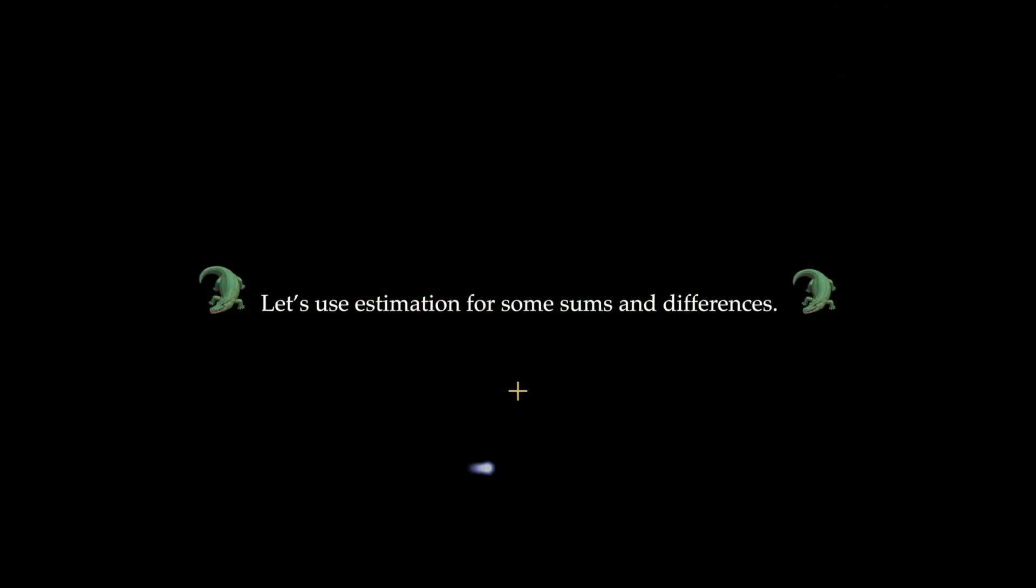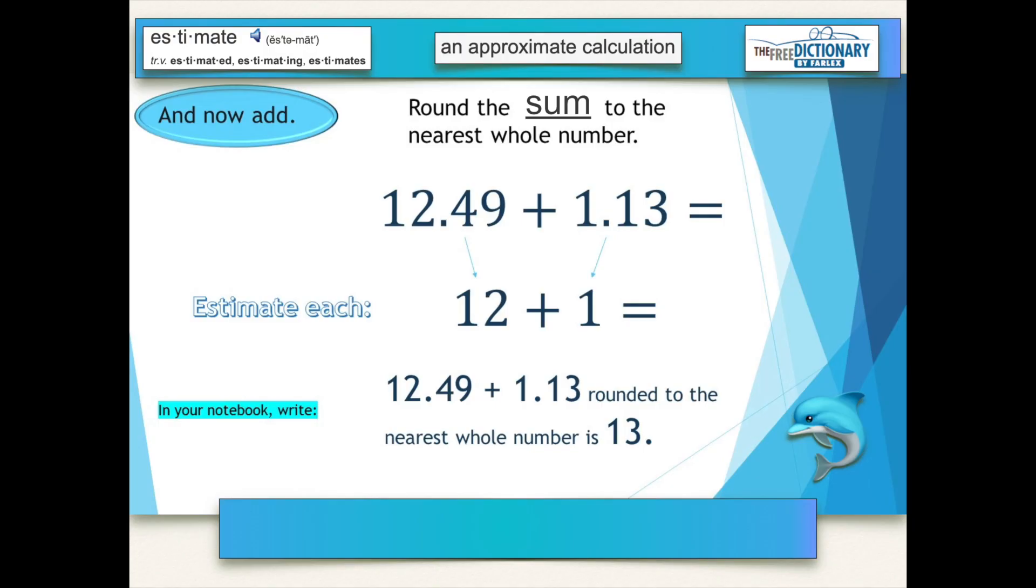All right, let's use estimation for some sums and differences. Your job is the same here, but you'll have to round twelve and forty-nine one-hundredths down to twelve. And one and thirteen one-hundredths down to one, and then add them together. And your best estimate for those two added together would be thirteen.